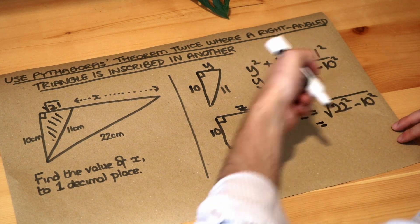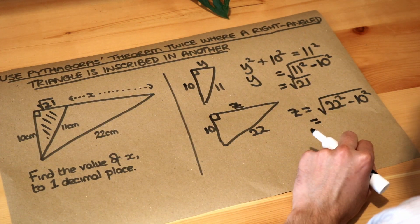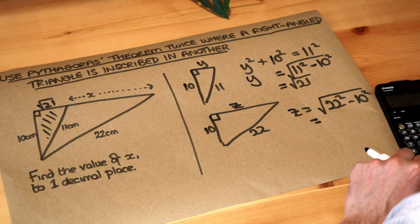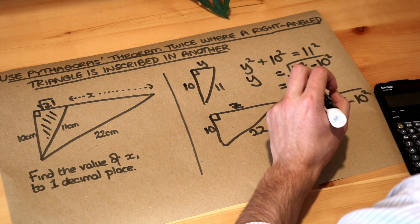So that's a quick way of doing it but you could do the full working and if I do that on my calculator the square root of 22 squared minus 10 squared is 8 root 6.